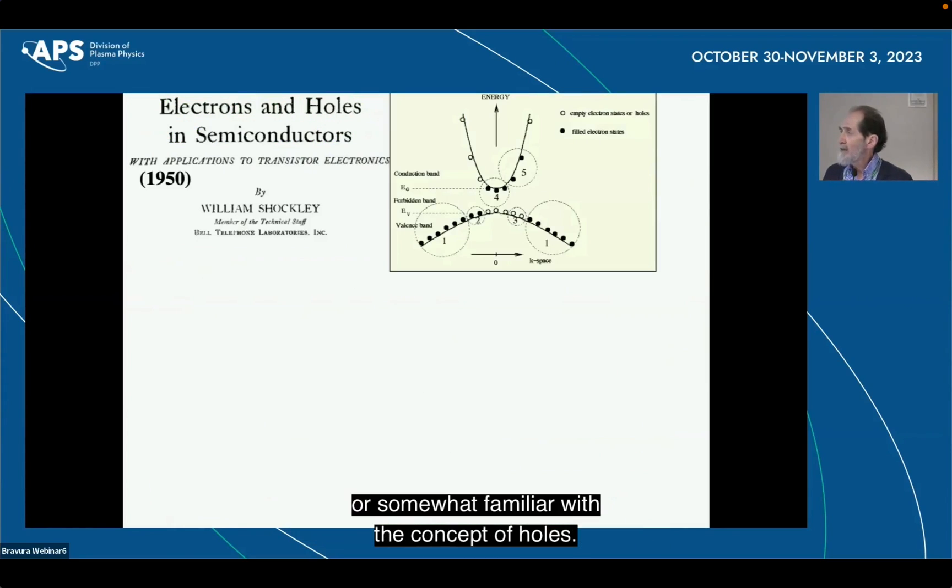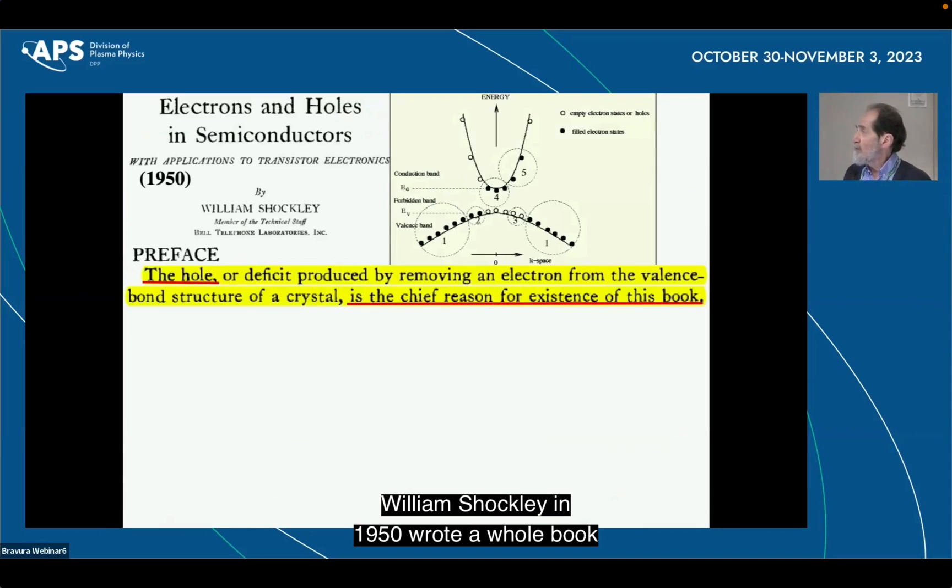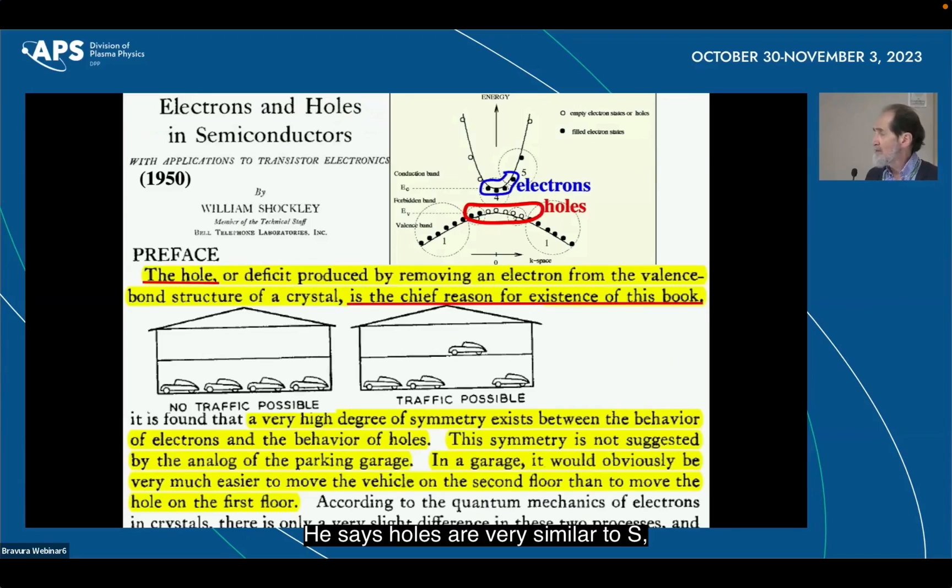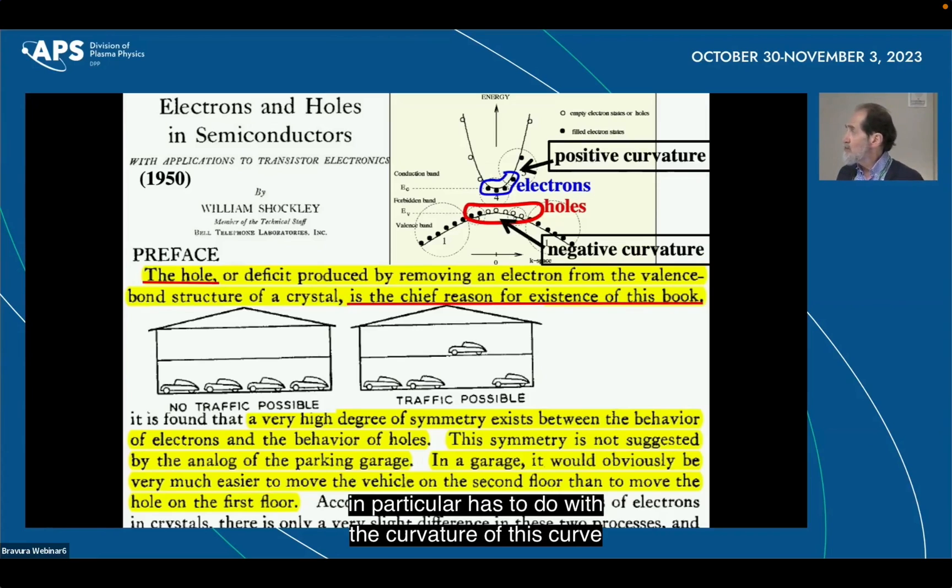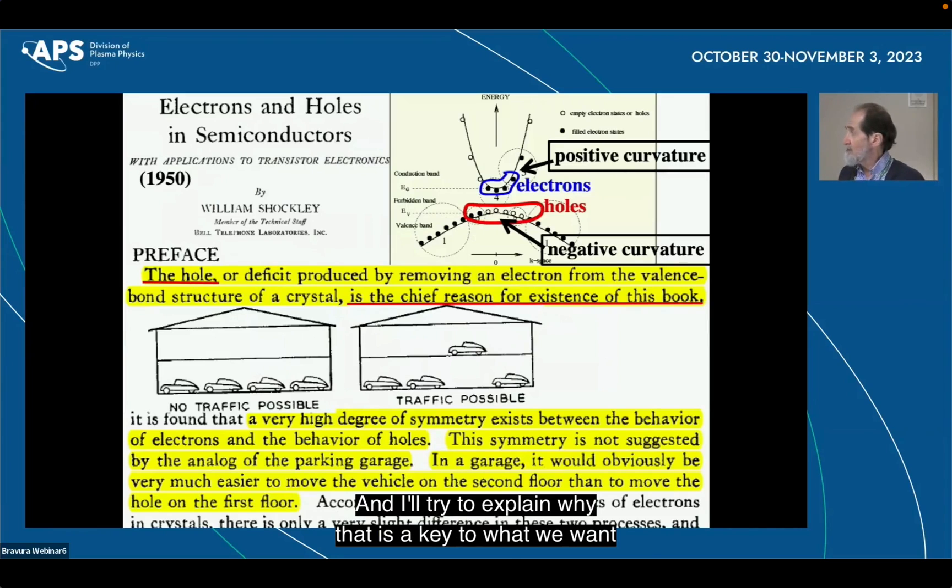Now, you probably are not very familiar or somewhat familiar with the concept of holes. William Shockley in 1950 wrote a whole book that is based on explaining why holes are important in semiconductors. And basically a hole is the absence of an electron. These are energy bands. And when a band is almost full, you talk about the missing electrons as holes. And he has a little garage analogy here. He says holes are very similar to electrons. But the reason they are not for superconductors in particular has to do with the curvature of these curves that I just drew here. And I'll try to explain why that is a key to what we want to understand if I have the time.